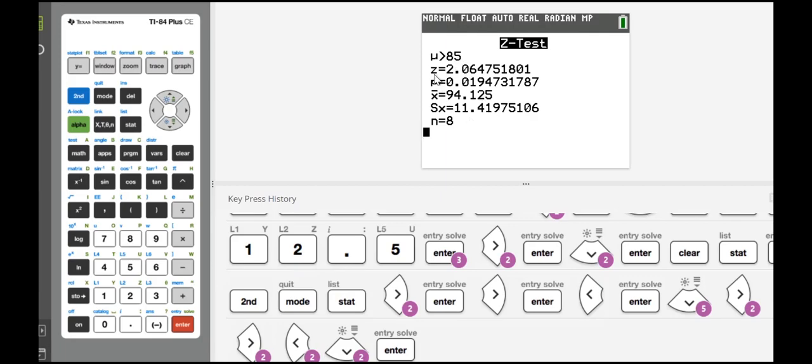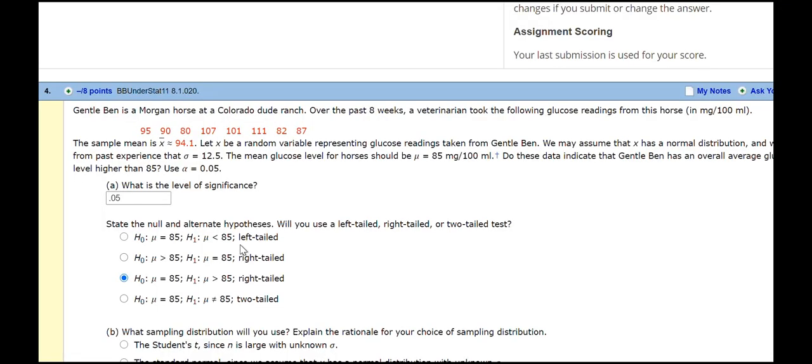And, so then we have this Z equals, so that's our test statistic. And, if we're using a table, we would use, then, our standard normal distribution table to find the p-value, which is 0.019. And, it tells us the x-bar and the standard deviation. Okay, so I wrote those numbers down.